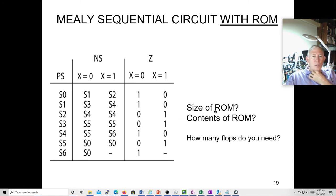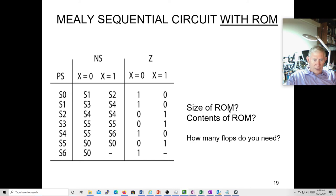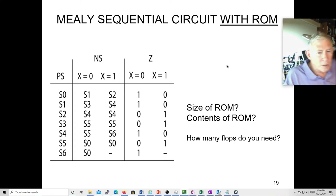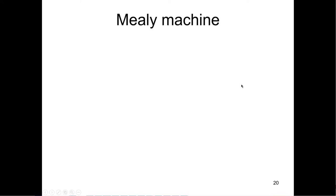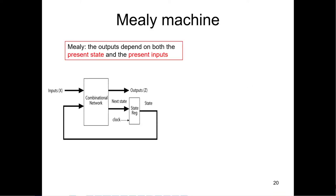What about the size and content? How many rows will the ROM have to have? It's got to have an input for the current state — a three-bit number — and an input for X, so that's four inputs. 2-to-the-4th = 16 rows. How many outputs? An output for Z, plus three outputs for the three flip-flop next-state D inputs. So four outputs total, four address lines, and three flip-flops.